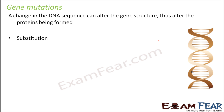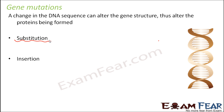There are many ways by which gene mutation can take place. The three main ways are: substitution, insertion, and deletion.